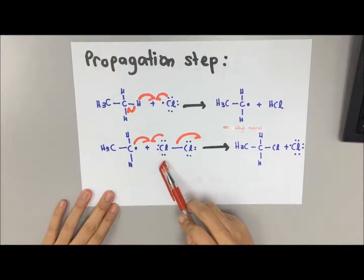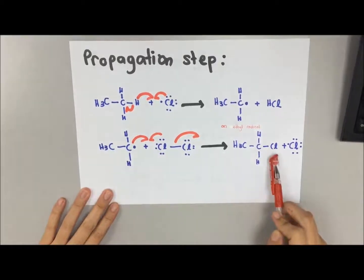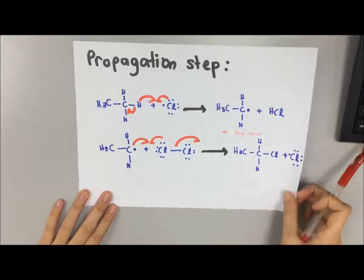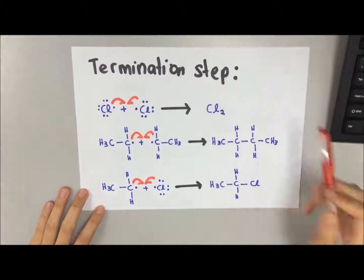After that, your ethyl radical will react with your Cl₂ to form one chloroethane and another free radical here.